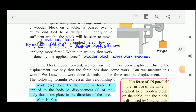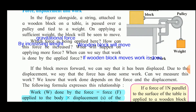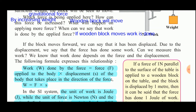In this example, the force being applied is the gravitational force. This force can be increased by increasing the weight applied on the pulley. On applying more force, the wooden block will move. We can say that work is done by the applied force if the wooden block moves. When the block moves forward, the force has been displaced, and due to that displacement, we say that the force has done some work.